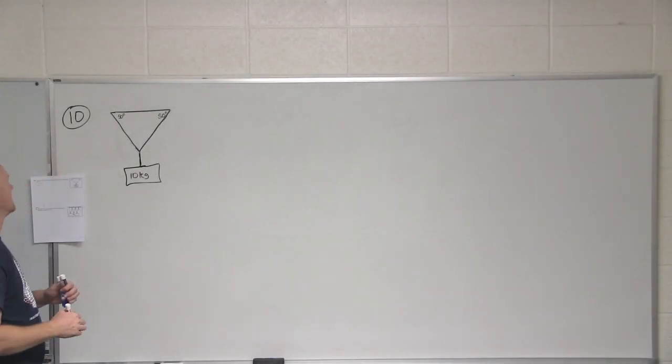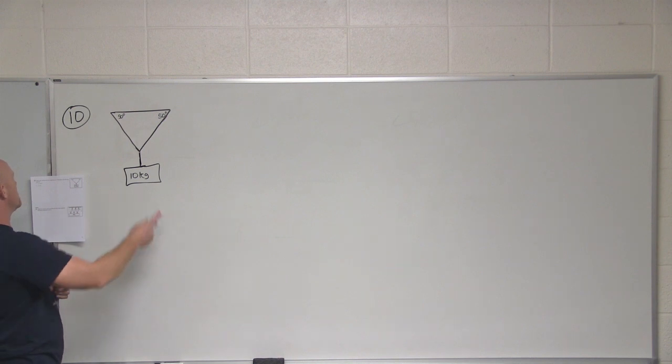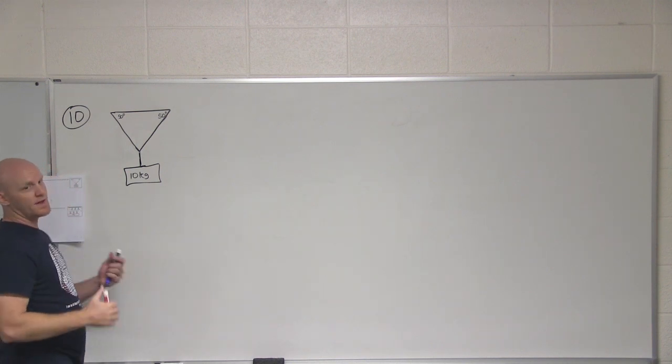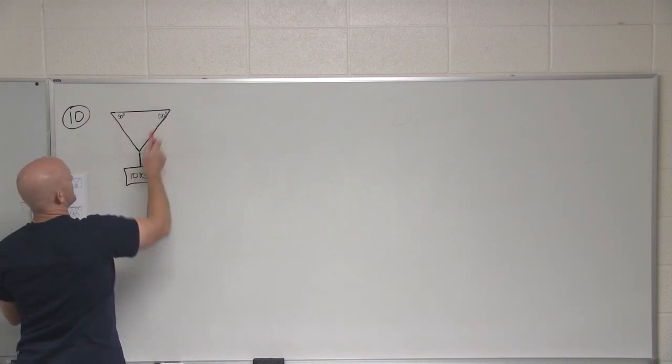Alright, let's take a look at number 10. Number 10 says, what is the tension in the wire supporting a 10 kilogram mass in the following diagram here? So here we've got a single wire, the mass is hung from a point right in the middle, and the wire makes an angle of 50 degrees to the horizontal at both junctions here at the ceiling.